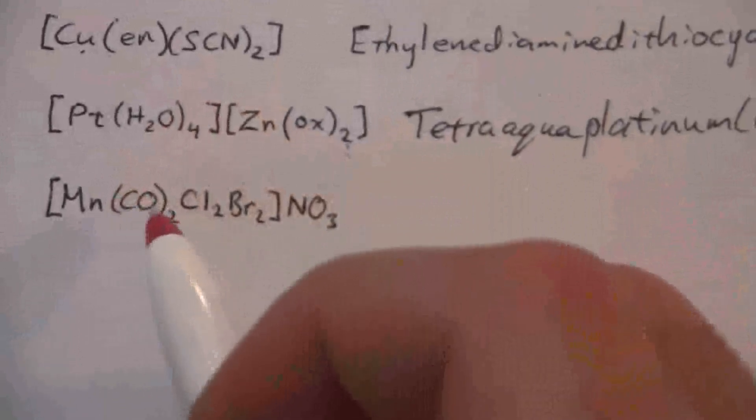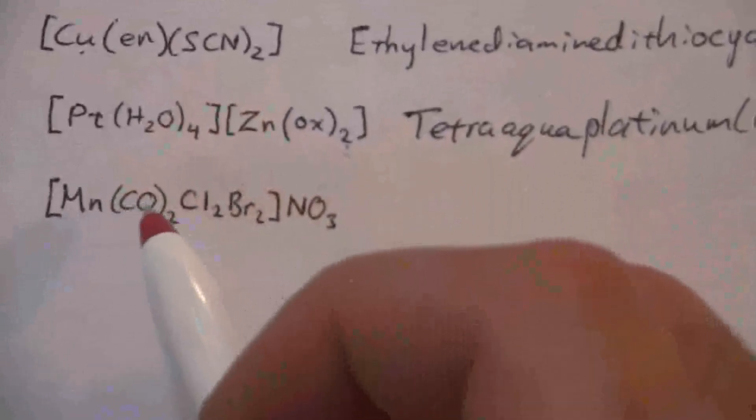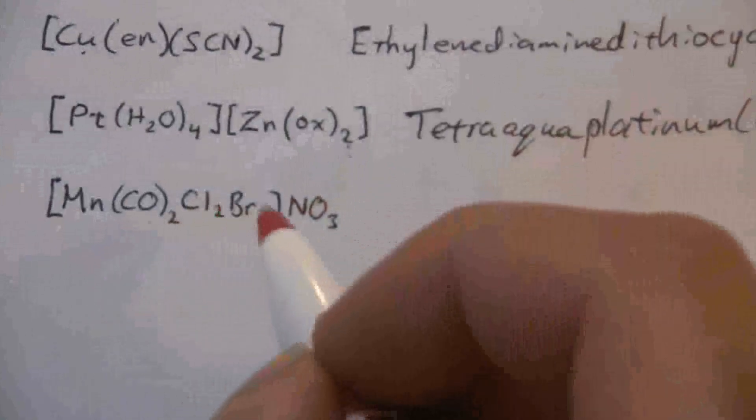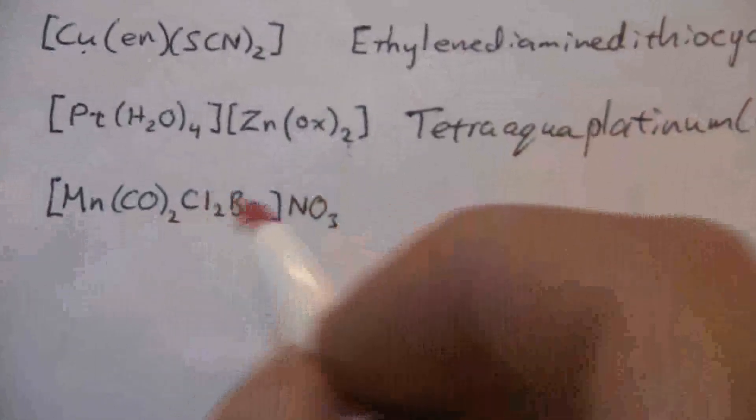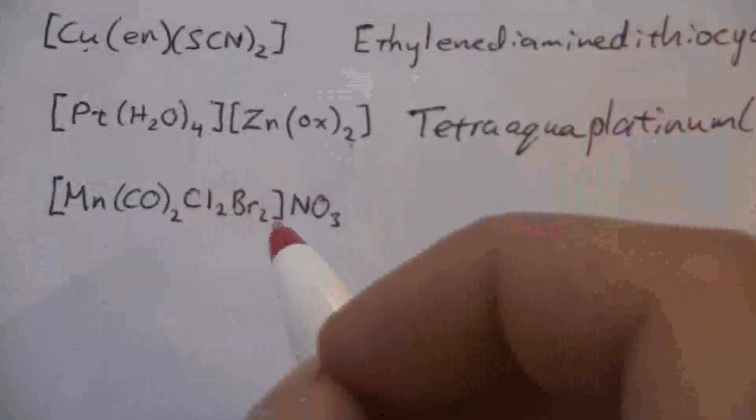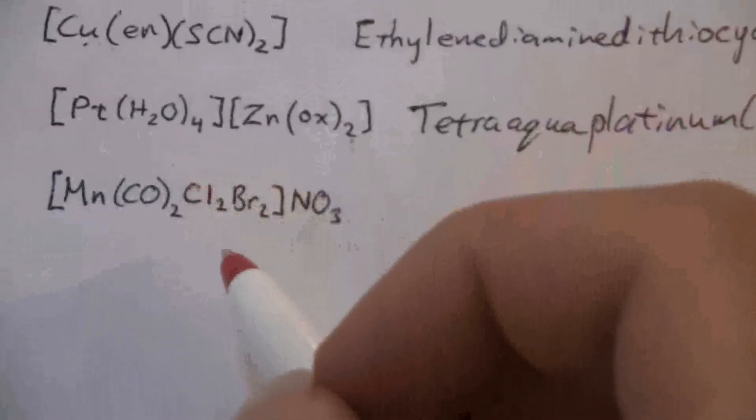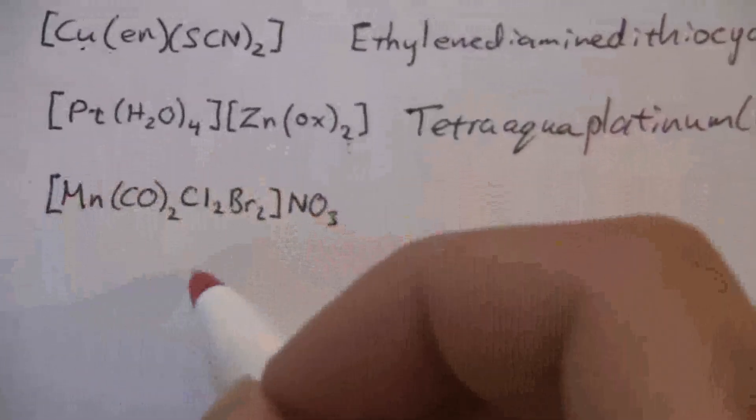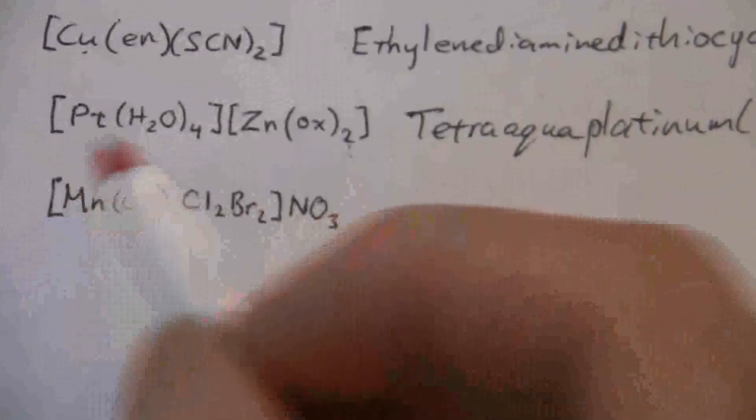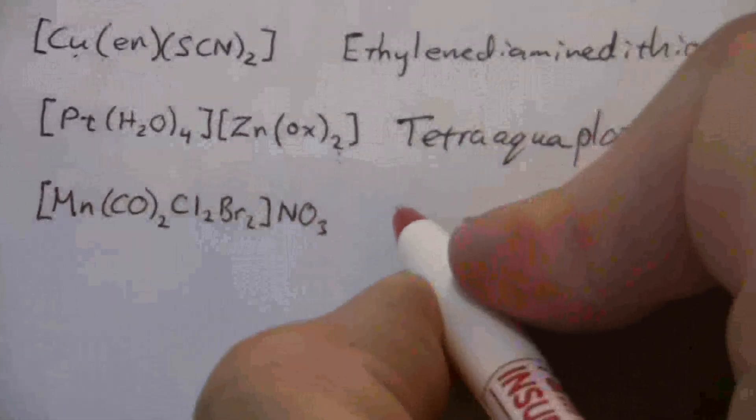We look at the carbonyl, or the carbon monoxide, that's neutral, and we have two chloro and two bromo. So that's a negative four altogether. And to get a positive one, we must have a positive five on the manganese. Okay.